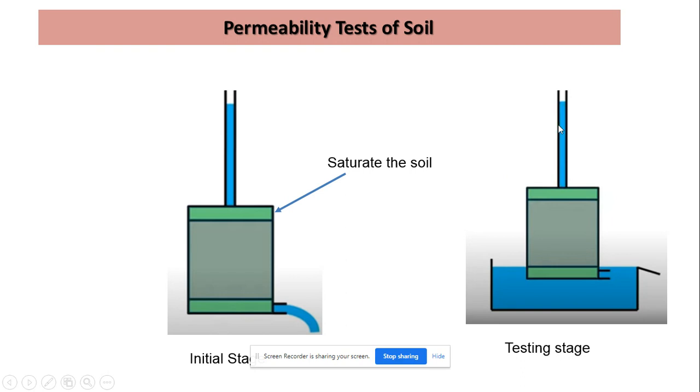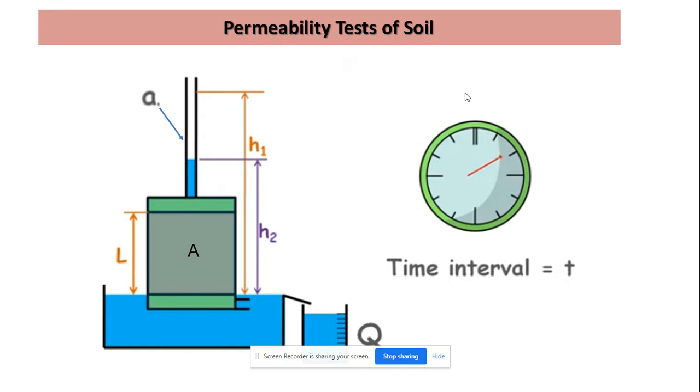In the testing stage we keep it in a tub of water and perform the test. Initially the head is h1, and in time t the head falls to h2, so the fall in head will be h1 minus h2. L is the length of soil sample, capital A is the area of soil sample.